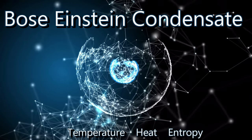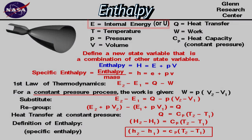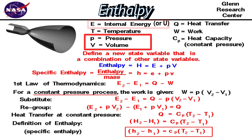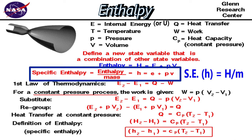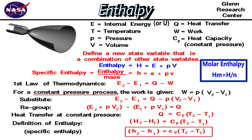Now we need to discuss enthalpy. Enthalpy is the sum of a thermodynamic system's internal energy and the product of its pressure and volume: H equals U plus P times V. H represents total enthalpy, U is the internal energy — the sum of all kinetic, potential, chemical, electrical, nuclear, and other energy — P is the pressure, and V is the volume. Enthalpy can be described as specific enthalpy (lowercase h), the total enthalpy divided by mass, or molar enthalpy, where we divide by number of moles.